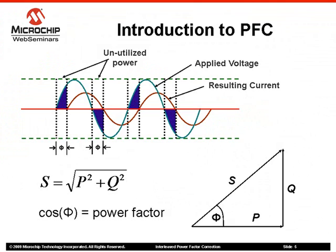Traditionally, the power factor is associated with the cosine of the angle between the real and apparent power components. For simplicity, the apparent power can be represented as the vector sum of the real and reactive power. But in the case of non-sinusoidal periodical signals, a more complex relationship between these components is considered.